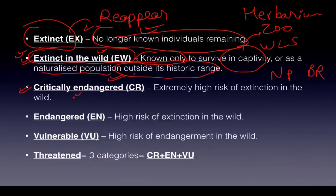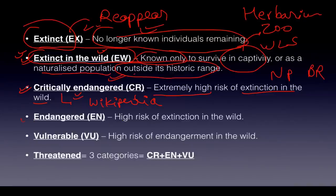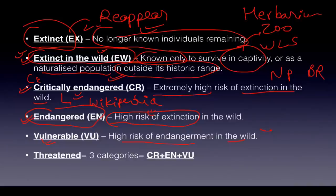Critically Endangered (CE) means an extremely high risk of extinction in the wild. Specific criteria — such as number of living individuals per square kilometer — exist and are available on Wikipedia if interested, though memorizing all of them may not be necessary. Endangered (E) means a high risk of extinction in the wild. Vulnerable (VU) means a high risk of endangerment. So: CE = extremely high risk of extinction; E = high risk of extinction; VU = high risk of endangerment. Together CE, E, and VU make up the 'Threatened' category.